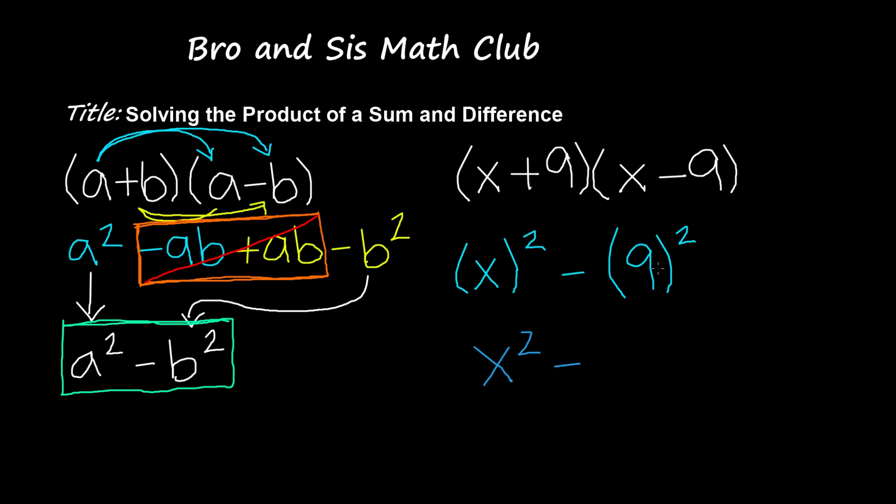And then subtracted by, and we have 9 times 9, we get 81. So we get x squared minus 81, and that would be the answer if you did it the other way. But this is an easier way. It's a quicker way to solve the product of a sum and difference. So this is how you solve the product of a sum and difference.